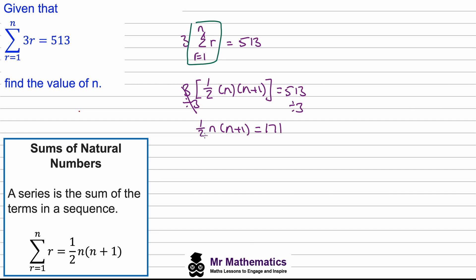We can move this division of two to the right hand side. We'll expand out this bracket, so n squared plus n will equal 171 multiplied by 2 which is 342. So now we've got a quadratic equation which we need to solve by making it equal to zero.